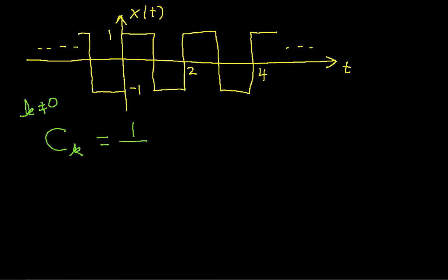So you remember that c_k is 1 over t₀, which in our case is 2. So we have ½, the integral from 0 to 2. Again, this can be over any fundamental period of the waveform, but 0 to 2 seems as good as anything else, times x(t)e^(-jkω₀t) dt. You'll remember that ω₀ is π, so I'll start using that in just a minute.